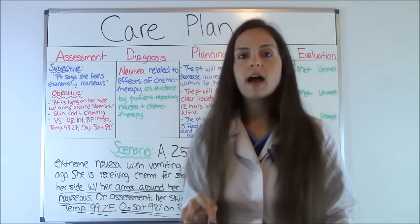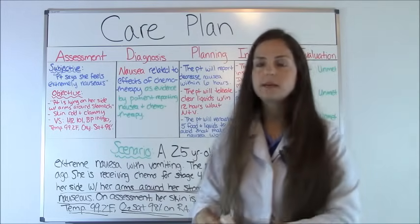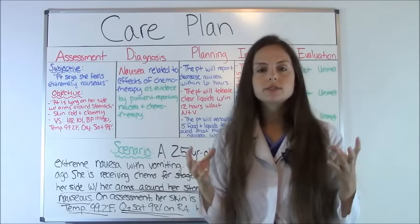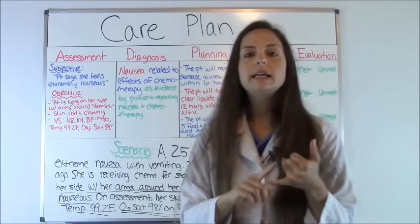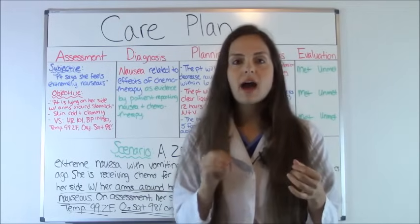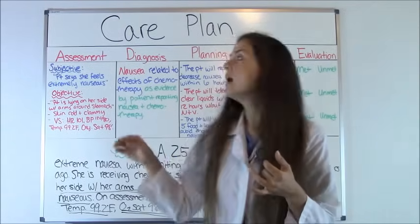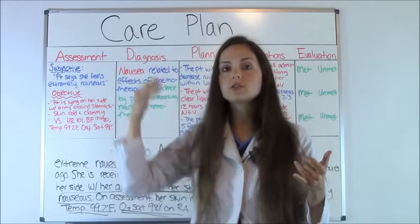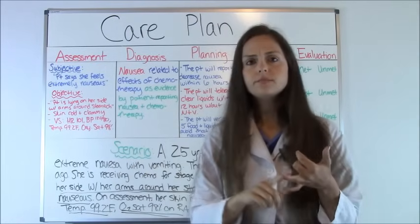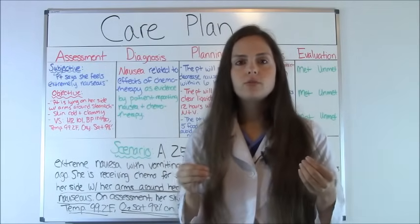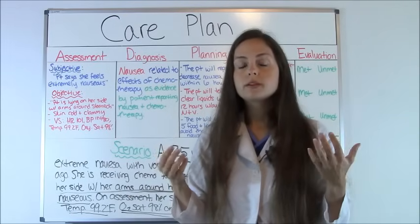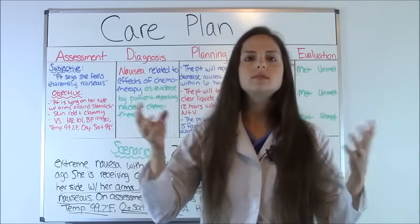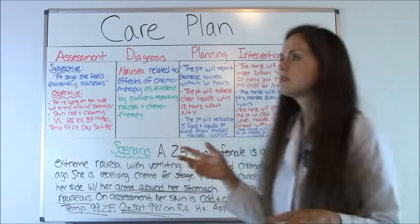Once you develop the nursing diagnosis, we move on to step four: the planning part, which is patient goals. A couple of things you need to know about planning: goals need to be specific to that patient — since what's going on is nausea, our goals need to correct that nausea. Second, they must be measurable, so your professor or another nurse can look at it and say, 'How are we going to know we met this goal?'